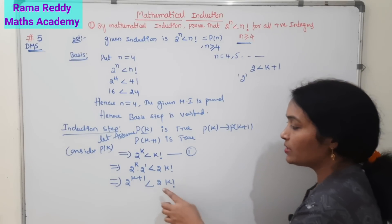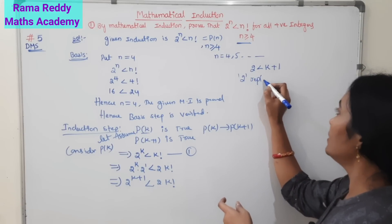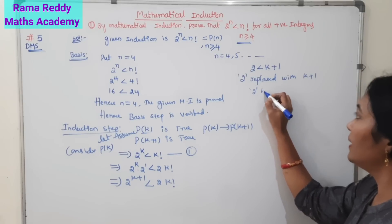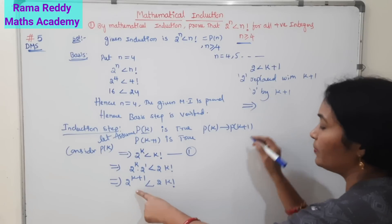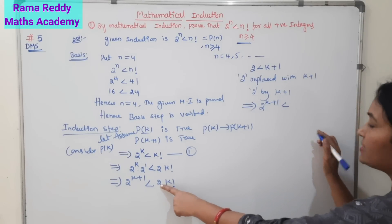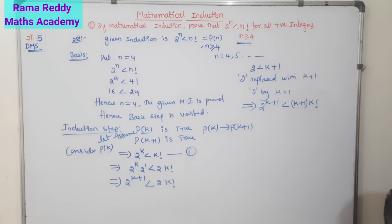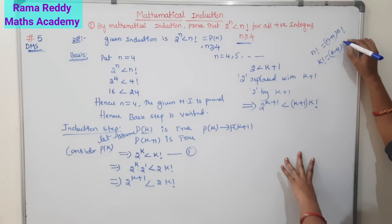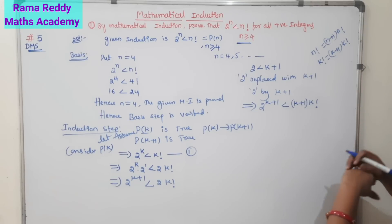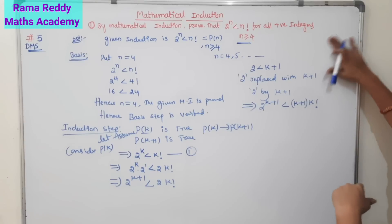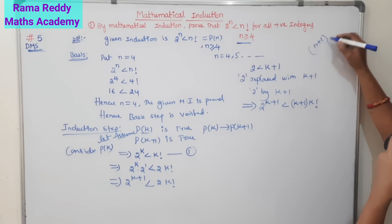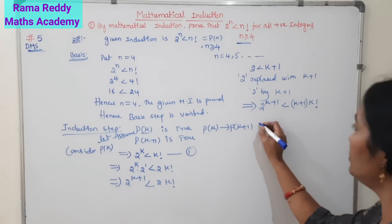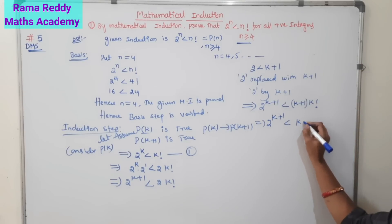Now, since n is greater than or equal to 4, we can replace 2 by k plus 1. Substituting 2 with k plus 1, the right-hand side becomes k plus 1 into k factorial. And we know that k plus 1 into k factorial equals k plus 1 factorial. Therefore, 2 power k plus 1 is less than k plus 1 factorial.